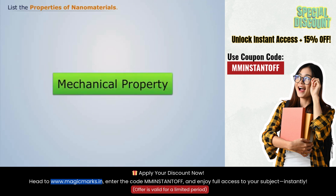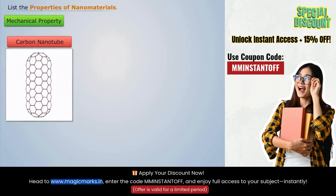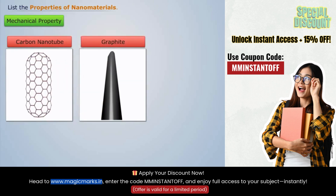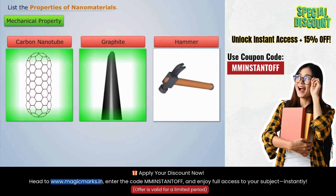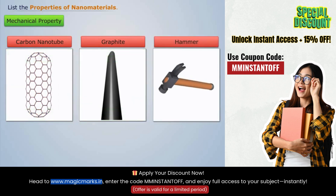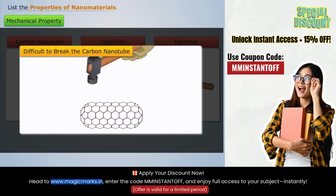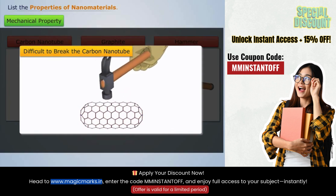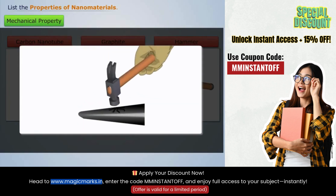Let's first discuss the mechanical properties. Consider a nanomaterial, say carbon nanotube, and its corresponding material in bulk, say graphite. When we apply force on these two materials, we notice that it is difficult to break the carbon nanotube compared to graphite.